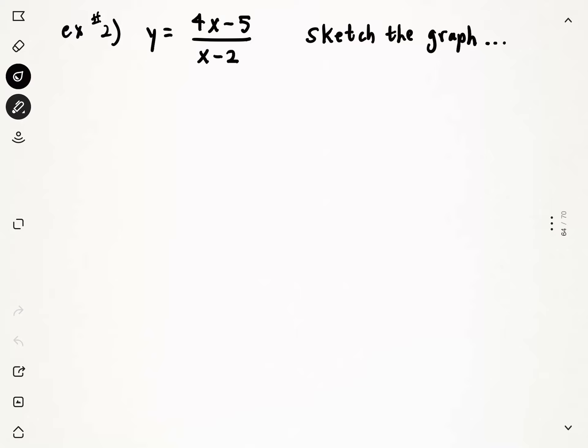What's different about this one, as opposed to the previous video, is that this is not in transformational form. You cannot make a mapping notation of this as it is. So what I'm going to do with you right now is show you some algebra that you can do to put it in transformational form, and then it becomes a problem just like the previous video.